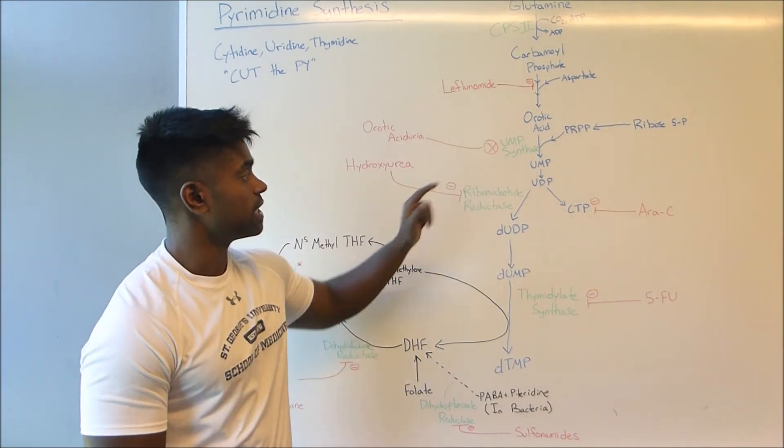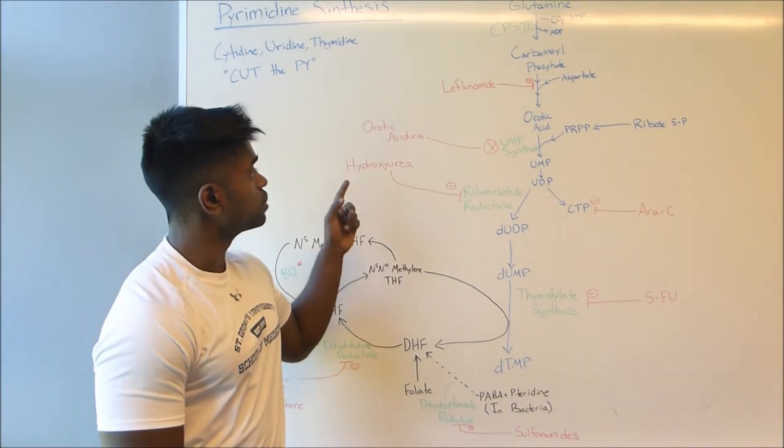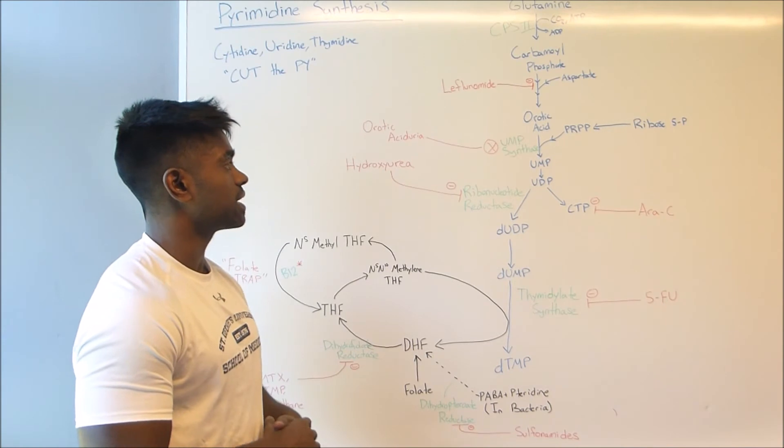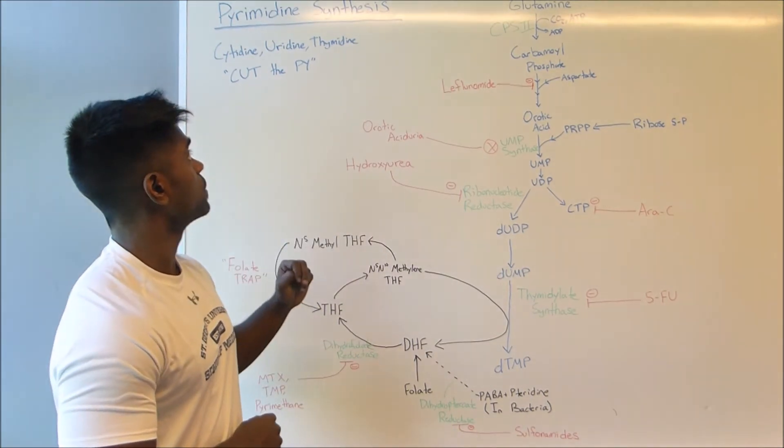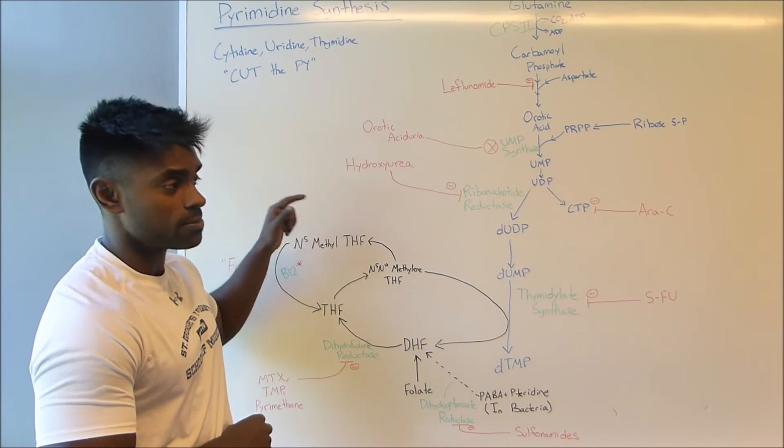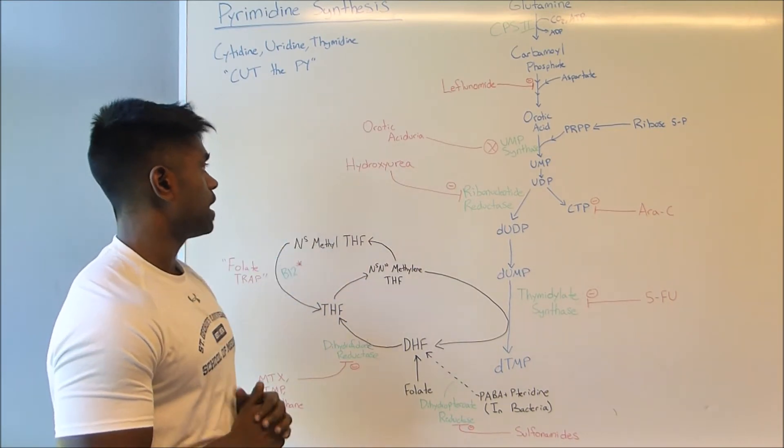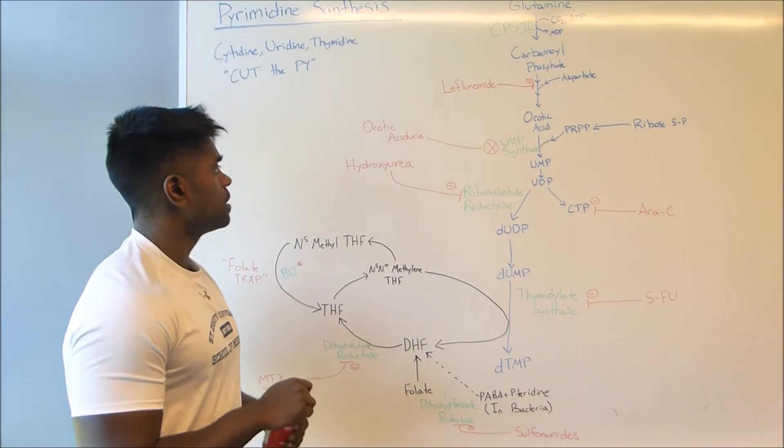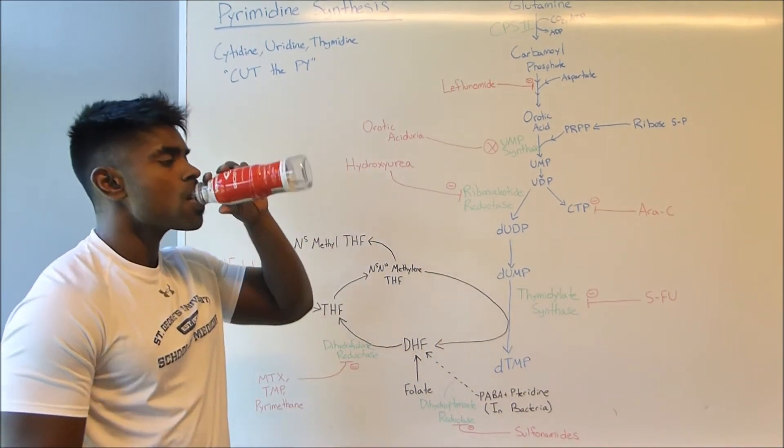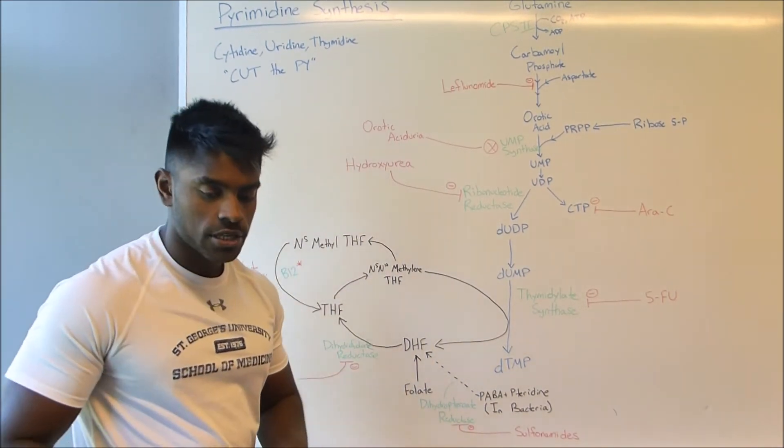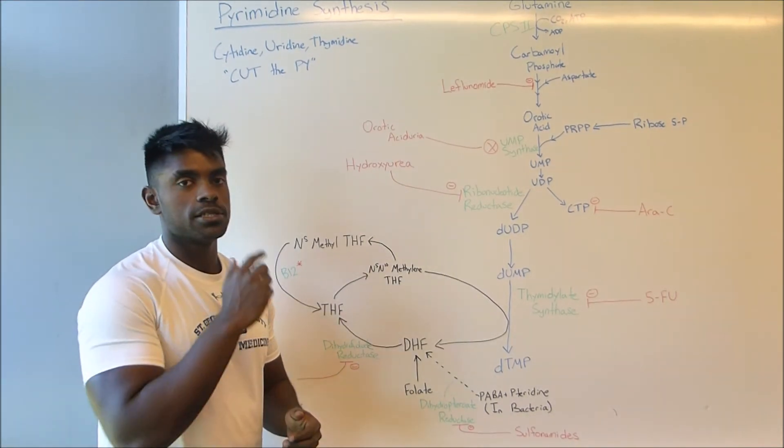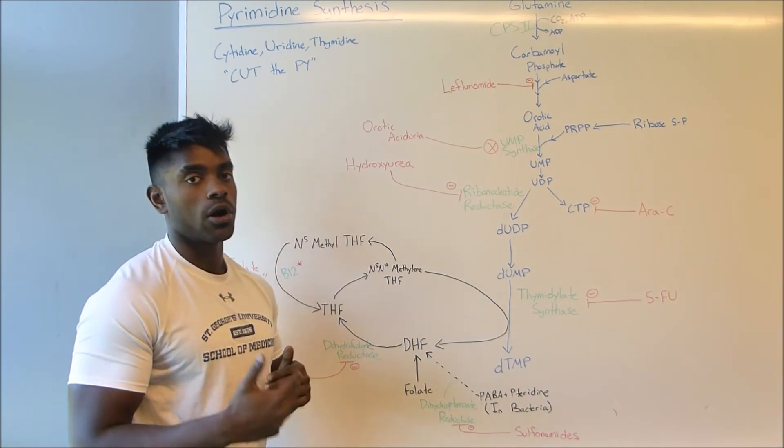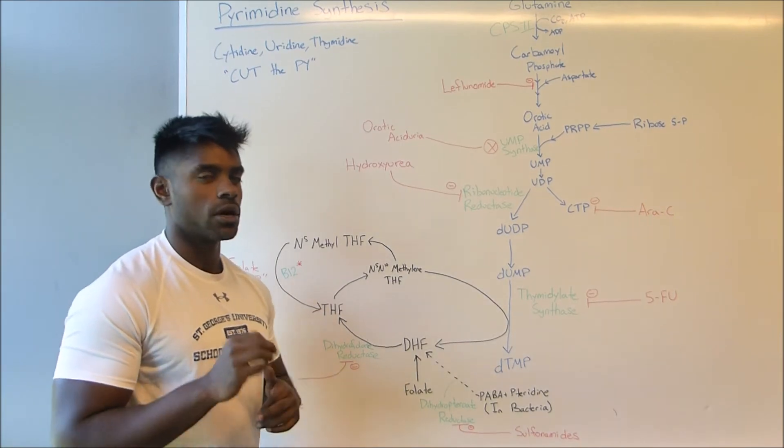Next what we're going to be talking about is hydroxyurea. Now hydroxyurea is actually going to come in and inhibit ribonucleotide reductase. This is also going to be used in the purine synthesis pathway as well, and we'll also be discussing it in that pathway as well. Now what's interesting with hydroxyurea is that it is actually prescribed to patients with sickle cell anemia because it increases the level of fetal hemoglobin which carries more oxygen of course. However the mechanism is not quite clear yet.